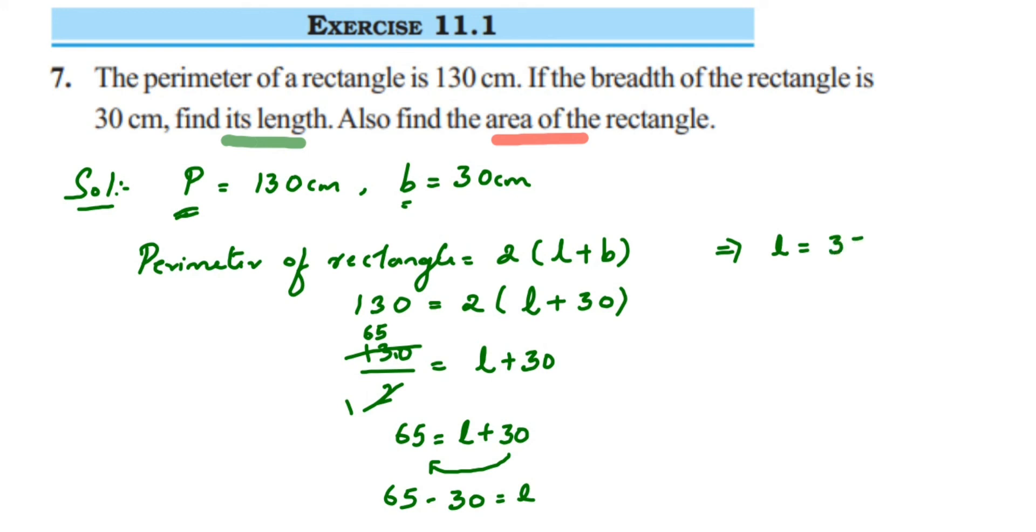So we got the first part—the length is 35 centimeters. Now the second thing they're asking is to find the area of the rectangle. The formula for area of a rectangle is length × breadth. So 35 centimeters × 30 centimeters = 1050 square centimeters.